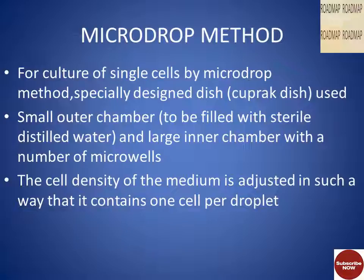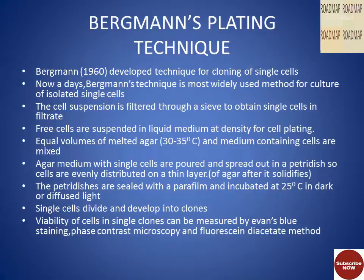Now coming to the micro drop method. For the culture of single cells by micro drop method, a specially designed dish called a Cuprac dish is used. It has a small outer chamber which is to be filled with sterile distilled water and a large inner chamber with a number of micro wells. The well density of the medium is adjusted in such a way that it contains one cell per droplet.